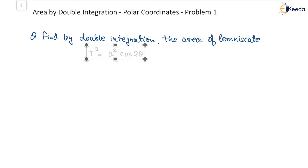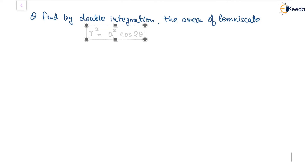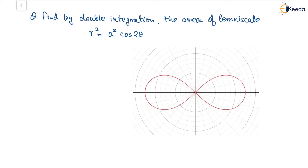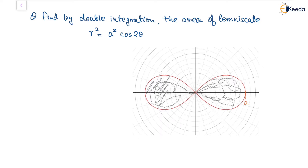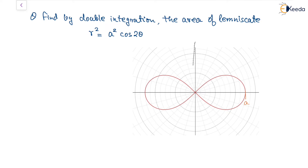For r² = a² cos(2θ), the radial distance r is going to be 'a' at the outermost point. The area required is this complete shaded region — both lobes of the lemniscate.